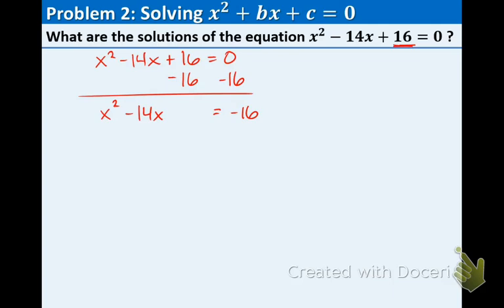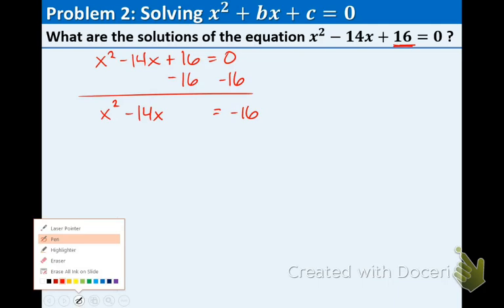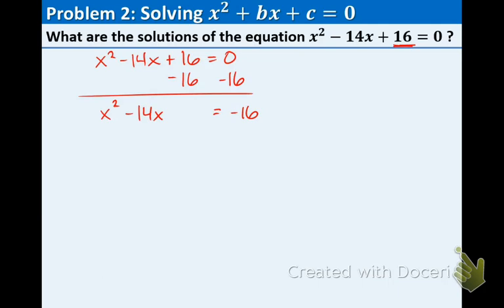Now we have to figure out what number are we adding to both sides. This is the completing the square method. So I'm going to do this on the side. The b value is negative 14. That is the number in front of the x. So let's go through the jingle. You half it, take that number, divide by 2. You square it, and then we're going to add to both sides. This number is negative 7 squared, and that equals 49. So what we're going to do is add 49 to both sides.